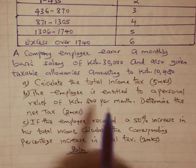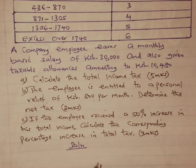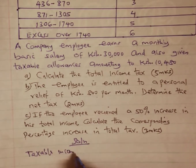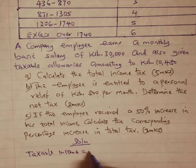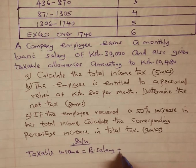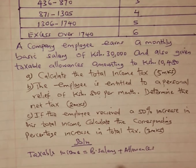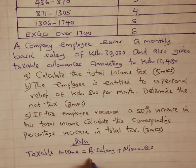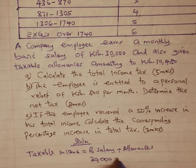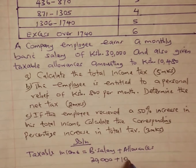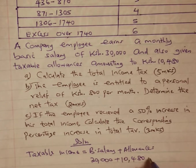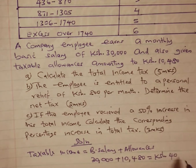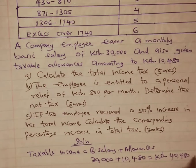For part (a), we first calculate the total taxable income. Total taxable income equals the basic salary plus all allowances. The basic salary is Kenya shillings 30,000, and we add taxable allowances of 10,480, giving us a total taxable income of Kenya shillings 40,480 per month.